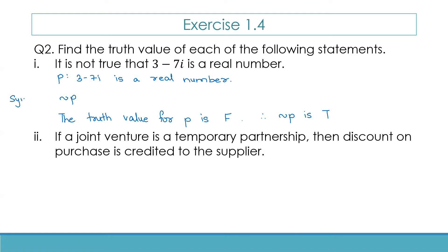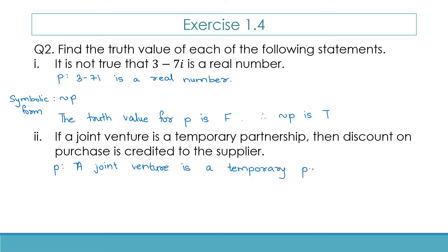You can write: symbolic form of the given statement is not P. Now let's do the next one. The second one is: if a joint venture is a temporary partnership, then discount on purchase is credited to the supplier. Here, statement P is going to be: a joint venture is a temporary partnership. And statement Q is going to be: discount on purchases is credited to the supplier.